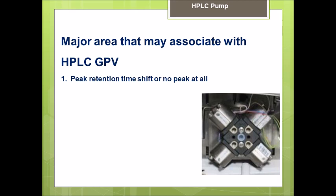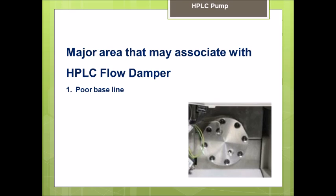The gradient proportion valve: the problem you're going to have is peak retention time shift or sometimes no peak at all, because the composition of the mobile phase that you're asking from the system and you have in your acquisition method, this gradient proportion valve is not able to deliver it. And the last one, the flow damper: you're going to have a poor baseline because it is not able to remove this oscillating motion of the pump piston and is not able to give you a steady or smooth flow.